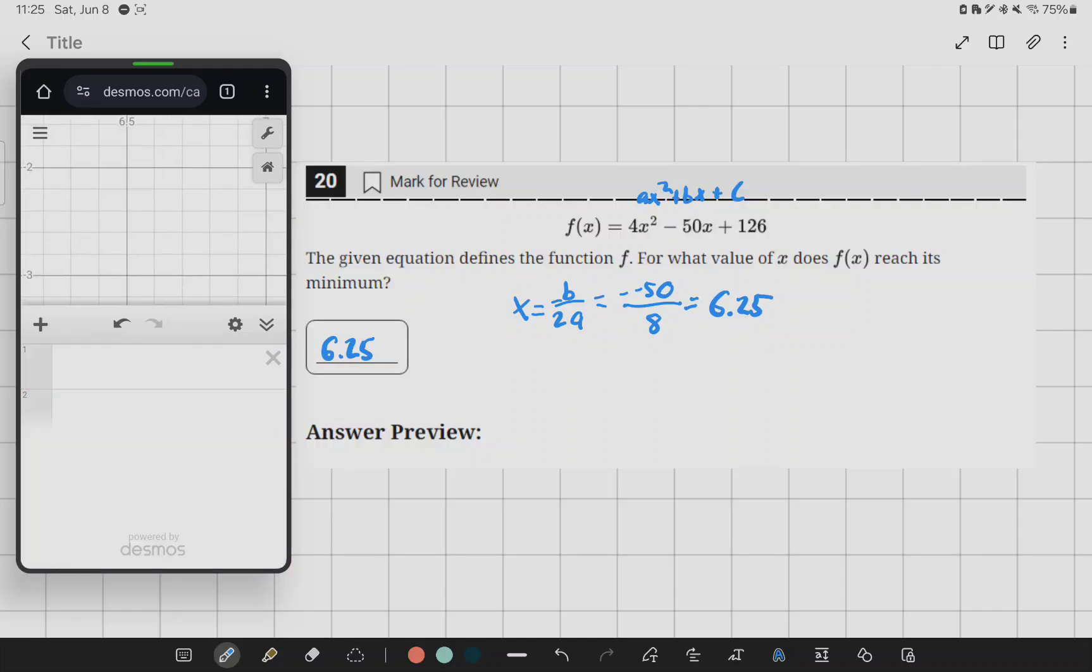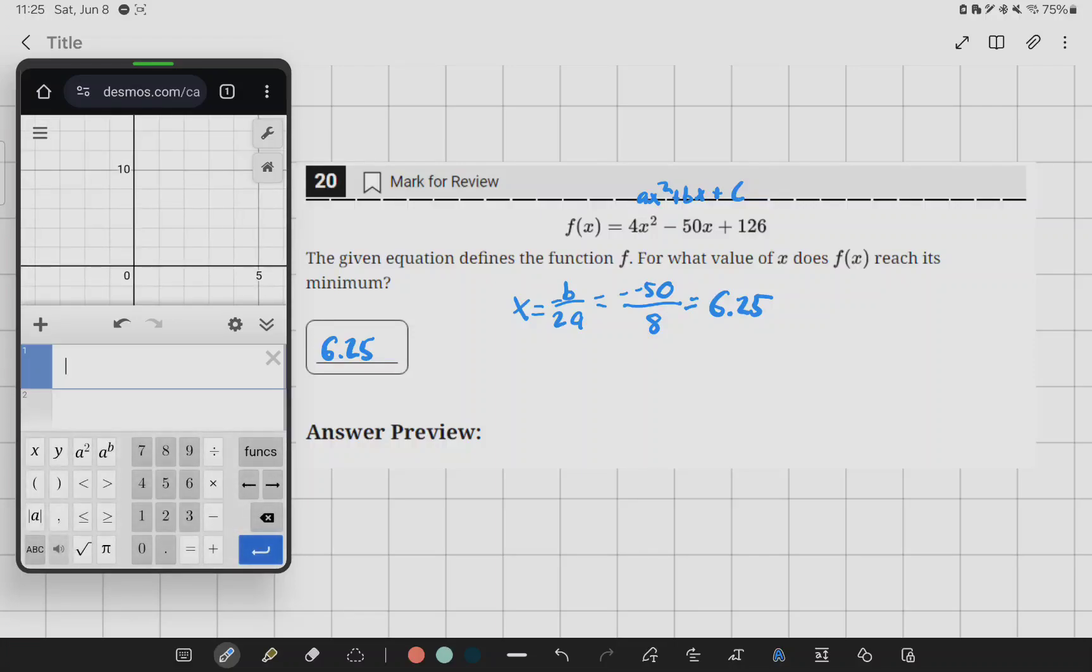And one way to obviously check this will be to plug this one in. So you'll have 4x squared minus 50x plus 126.